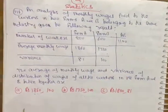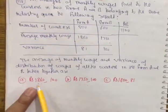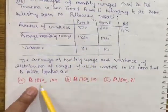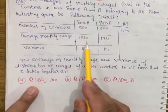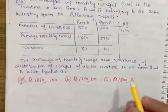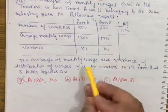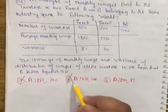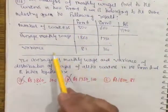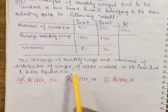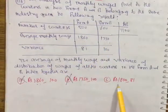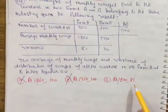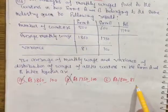Looking at the options, one shows monthly average wages as 1860, another as 1850. Option with 1850 is not possible. The average monthly wages will be different from either individual firm - it can be different. But if the variance is shown as 81, the same as firm A alone, this is not possible because when combining two different distributions, both the average and variance will change.